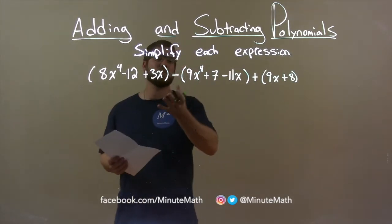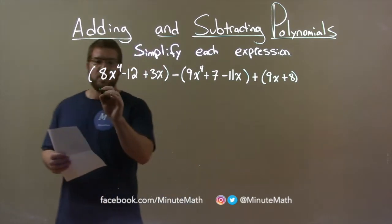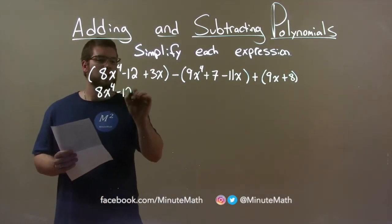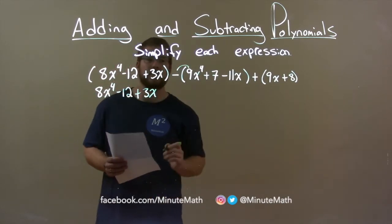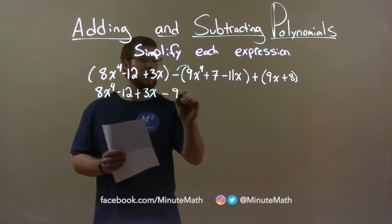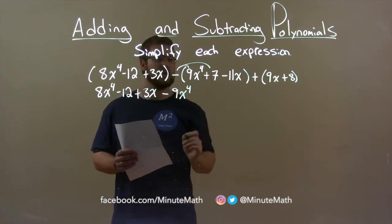So now I need to distribute my minus sign. 8x to the 4th minus 12 plus 3x just comes down. We distribute the minus sign, minus 9x to the 4th here, distribute the minus again.